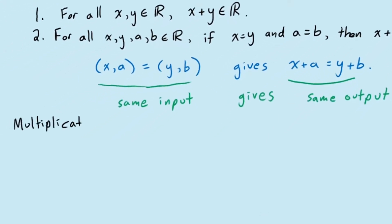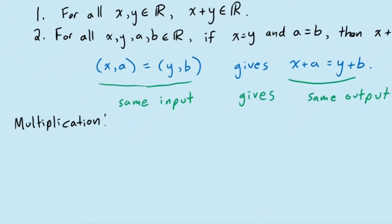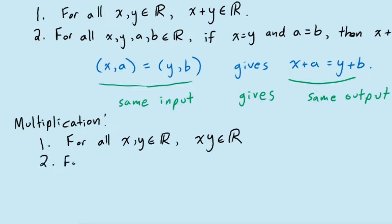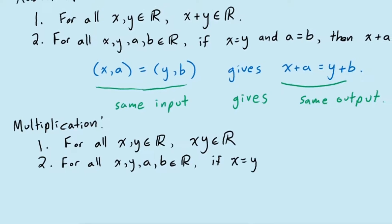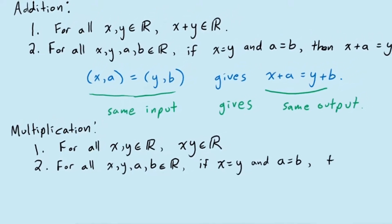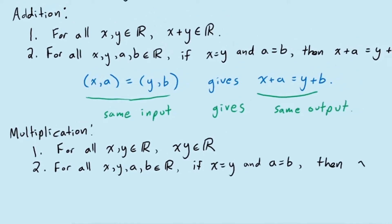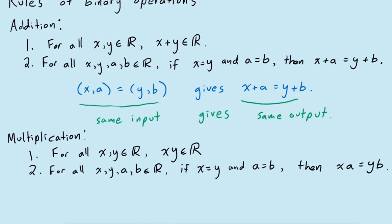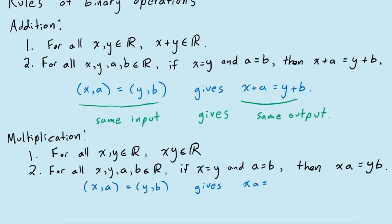Since multiplication is also a binary operation, it has the same two defining properties. The first being that for any two real numbers x and y, the product x·y is also a real number. And the uniqueness property that if we have two pairs x, y, a, and b, with x equal to y and a equal to b, then multiplying x and a will produce the same result as multiplying y and b.